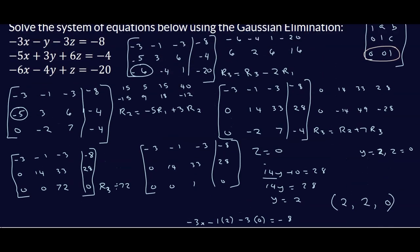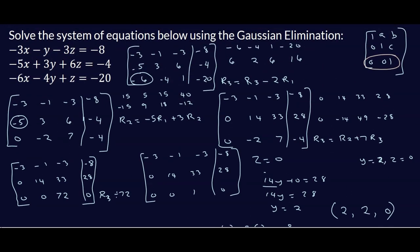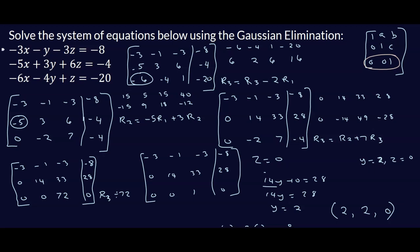Let's spot-check the solution (2, 2, 0). For row 2: negative 5 times 2 plus 3 times 2 plus 6 times 0 equals negative 10 plus 6 equals negative 4. That's correct. For row 3: negative 6 times 2 minus 4 times 2 plus 1 times 0 equals negative 12 minus 8 equals negative 20. Correct.